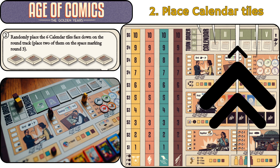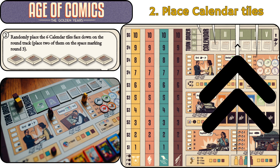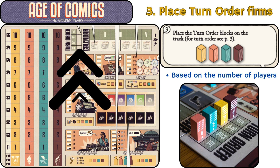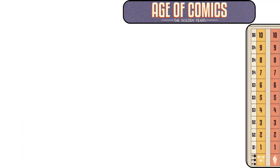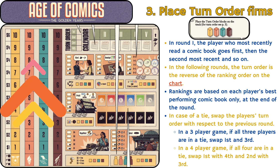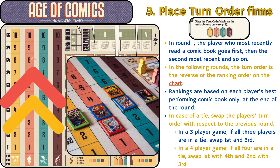Step 2: Randomly place the six calendar tiles face down on the round track. Place two of them on the space marking round three. Step 3: Place the turn order blocks on the track based on the number of players. In round one, the player who most recently read a comic book goes first, then the second most recent, and so on. In the following rounds, turn order is the reverse of the ranking order on the chart. Rankings are based on each player's best performing comic book only at the end of the round. In case of a tie, swap the player's turn order with respect to the previous round.